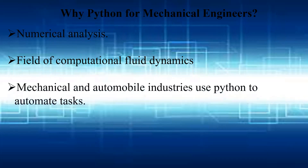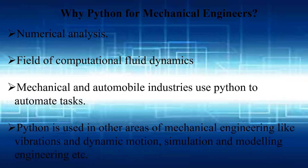Mechanical and automobile industries use Python to automate tasks. In recent days, all manual tasks are done by automation. By using automation tasks written in Python, we can automatically predict whether a task is successful or unsuccessful before the release of a product. Python is also used in other areas of mechanical engineering like vibration and dynamic motion, simulation and modeling engineering, etc.